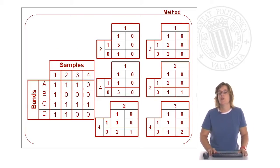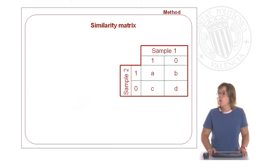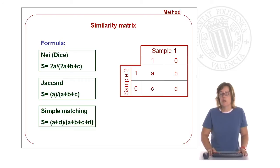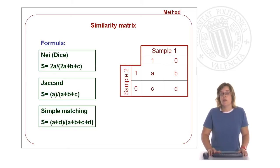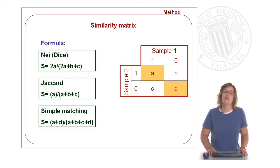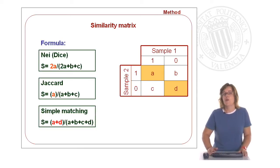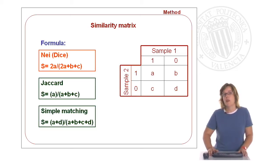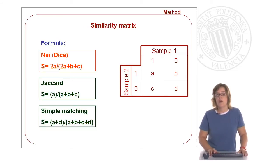We will establish this comparison for each of the pairs we can form from our samples. Once we have established this comparison, we need to use a formula to establish the similarity between each pair of samples. Most of the formulas you can use when working with dominant molecular markers include similarities — bands which are present in both, or bands which are not present in any of the samples. All the formulas account for the coincidence of bands. For example, in the DICE formula we will use, we have twice the bands which are present in both samples, and we do not consider bands absent in both sample one and sample two.